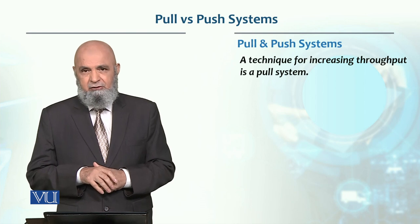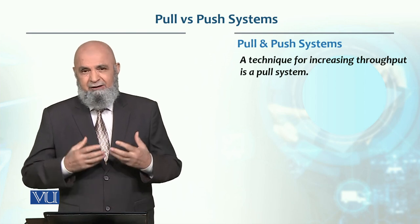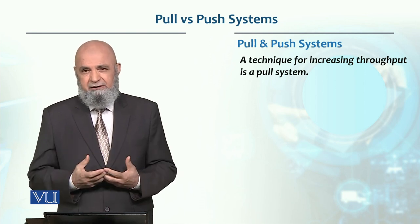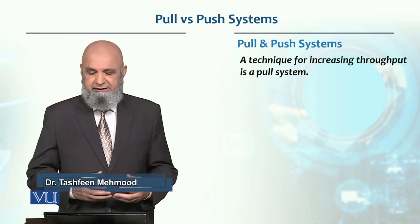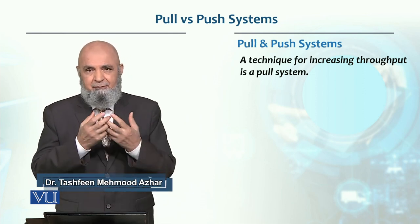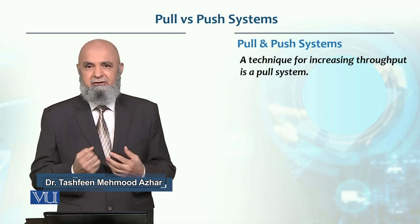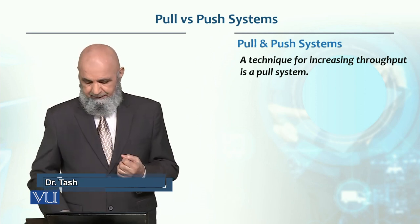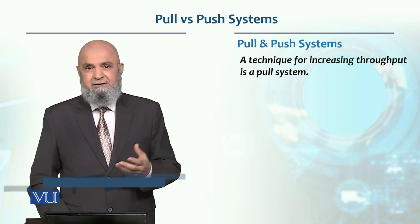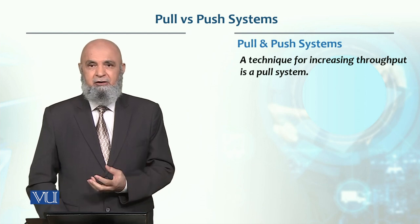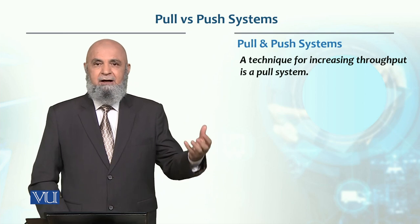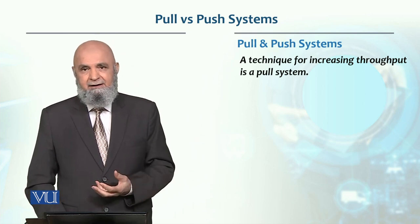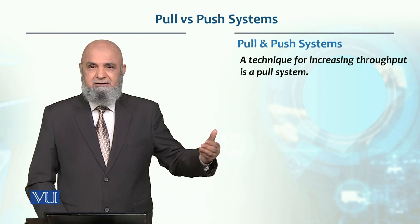With the pull system, throughput increases and inventory is reduced. Because when demand comes, production starts. For example, when a customer's demand comes, it triggers final product production. The final product production then signals the upstream work center, and the system operates on this basis.